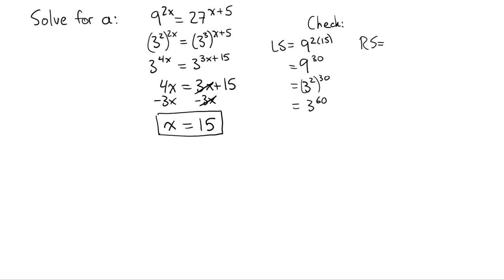So the right side, we're going to get 27 to the power of 15 plus 5. So 27 to the power of 20. And so if we have 27 to the power of 20, that can be written as 3 cubed to the power of 20. And we get 3 with the power rule again to the power of 60.